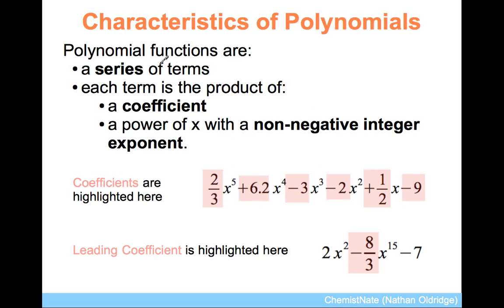You'll notice that polynomial functions are a series of terms, which means they're added together, or subtracted if the coefficient is negative. Each term is the product of a coefficient. The coefficients are what is highlighted in this first equation, and powers of x with non-negative integer exponents.